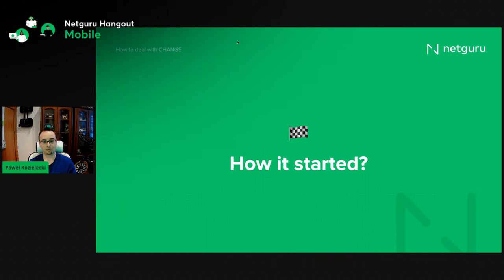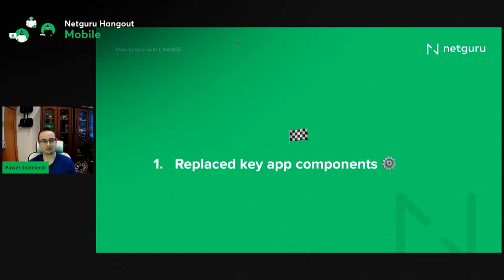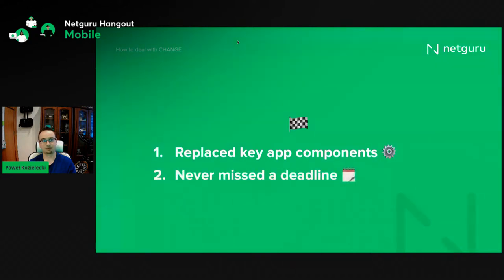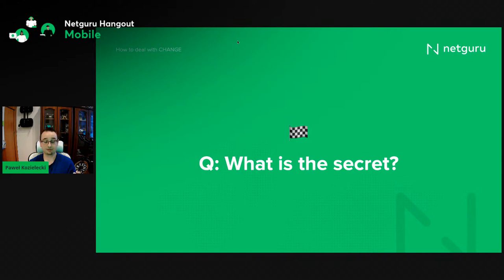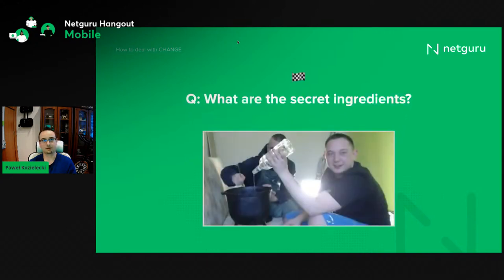There hasn't been a single month where we weren't tasked with changing the way we connected to our backend, or totally revamping visual flows in the application. Even though we had to replace nearly all of our critical components, we never missed a deadline. And, which is even stranger, we managed to maintain good quality code and pretty decent test coverage — upwards of 90% real unit test coverage. So the question remains: what's the secret?